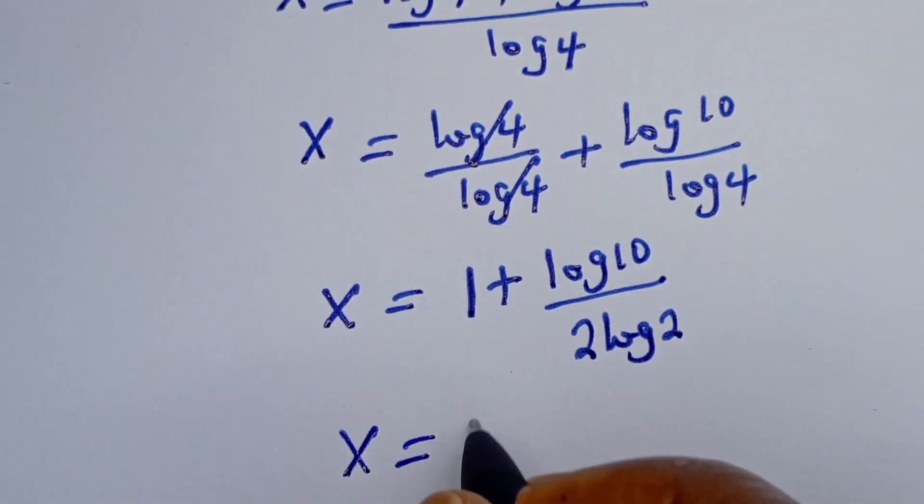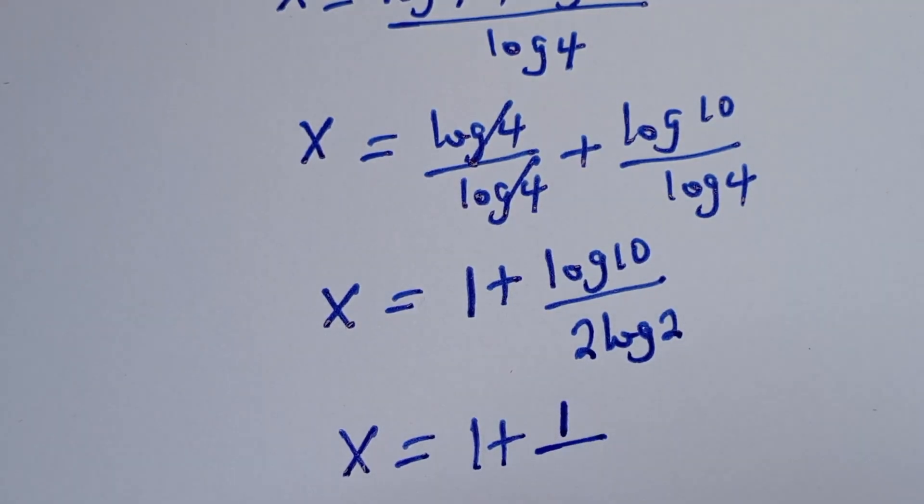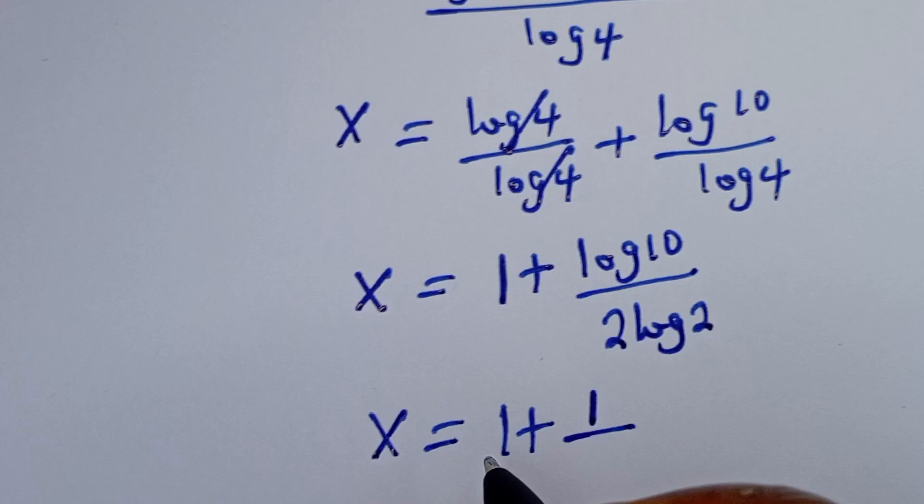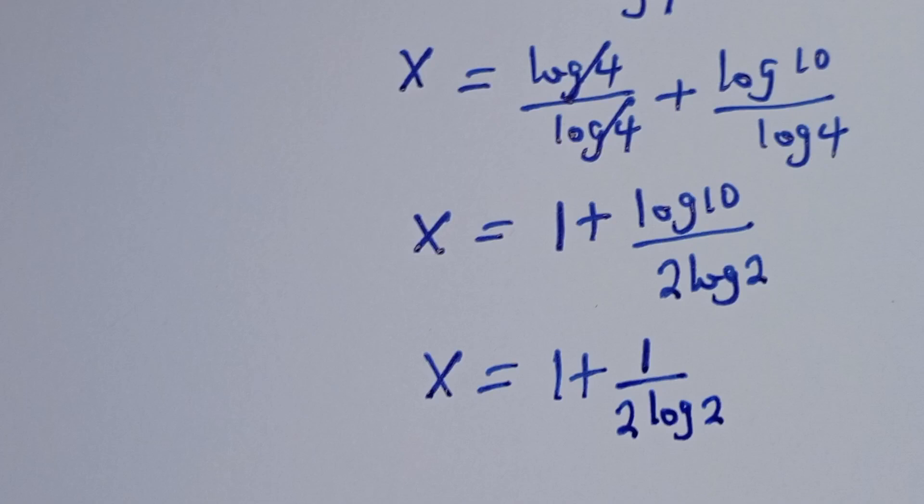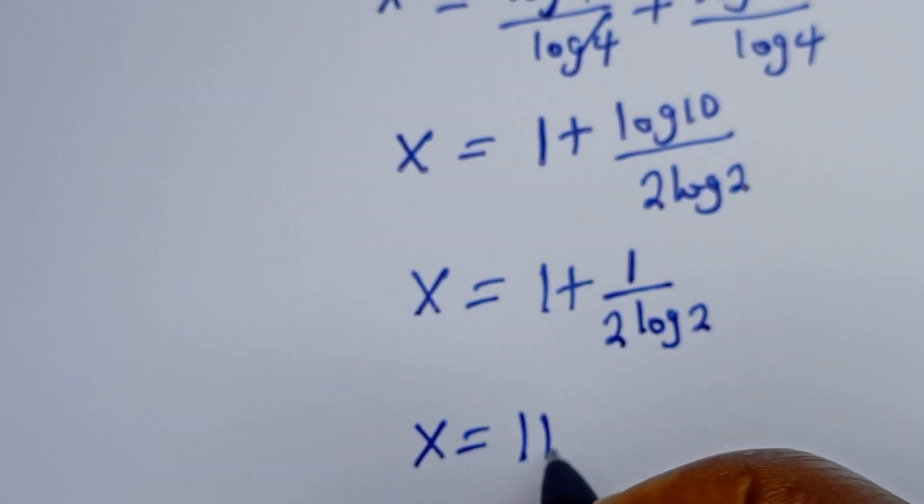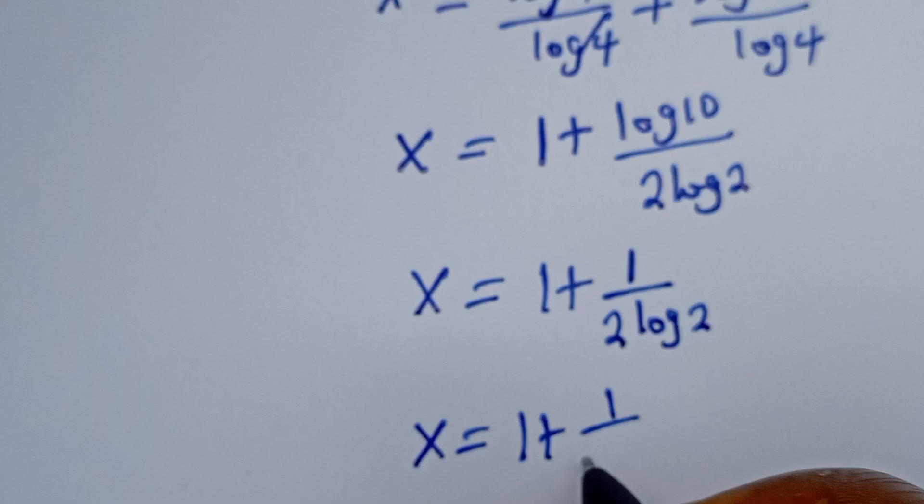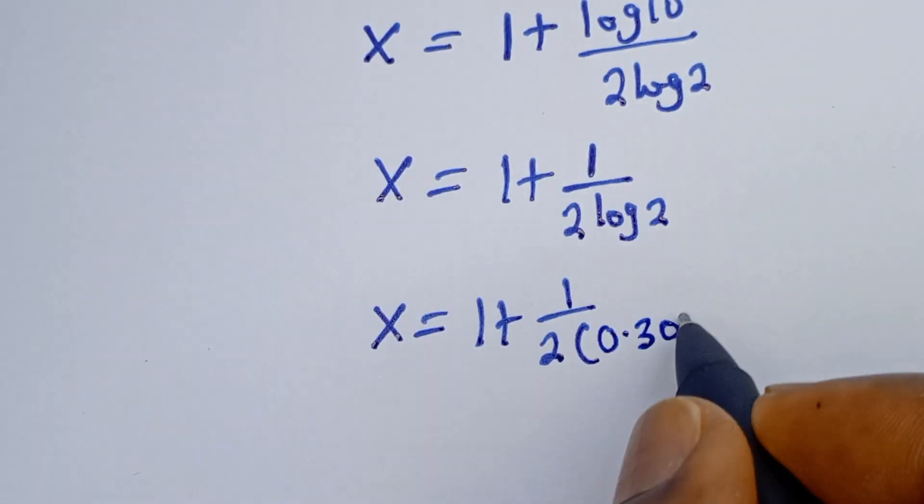x is equal to 1 plus log 10 divided by log 4. x is equal to 1 plus 1 over 2 bracket. Log 2 is 0.3010.